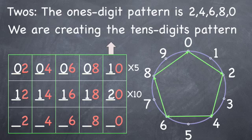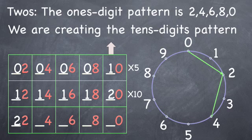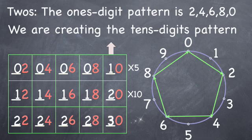The pattern is clear and the next row is 2, 2, 2, 2, 2, and up to 3, creating 22, 24, 26, 28, 30, which is 15 times 2.